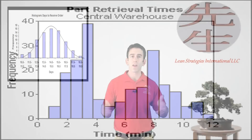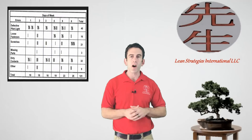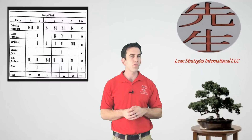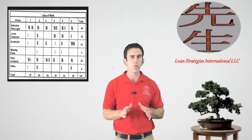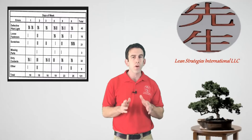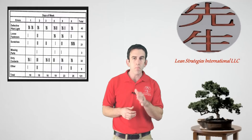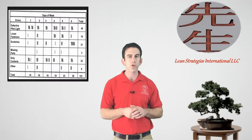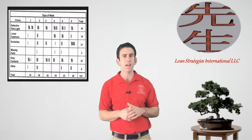The next tool in our set of 7 basic quality tools is the Check Sheet. The Check Sheet is often times a great place to start improvement initiatives. Check Sheets are a simple and easy to use tool for summarizing occurrences of specific events through tally counting. One important thing to keep in mind when creating a Check Sheet is that the team members who are creating them have ample amounts of time to create and gather accurate data.